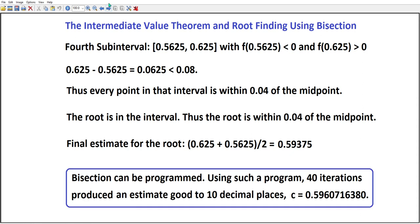What's important here is you can program the bisection method. Nobody does this by hand for any length of time. And when I use such a program, 40 iterations produced an estimate good to 10 decimal places: c = 0.5960716380. You can use this to get as good an estimate as you need. So it's actually a pretty powerful method.